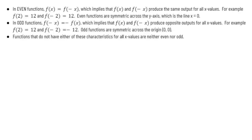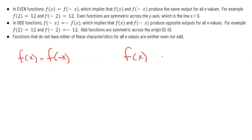Odd functions satisfy f(-x) = -f(x). This implies that f(x) and f(-x) produce opposite outputs for all x values. For example, if I plug 2 into my function and get 12, when I plug in -2 I get -12 — it's the opposite. Odd functions are symmetric across the origin (0, 0). Functions that don't have either of these characteristics for all x values are neither even nor odd.